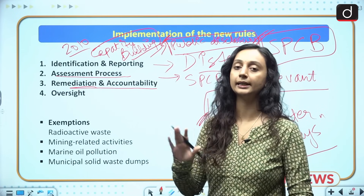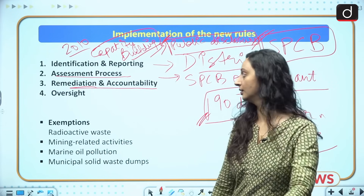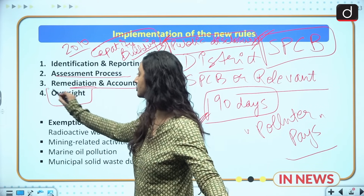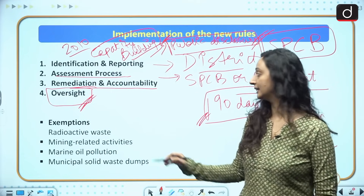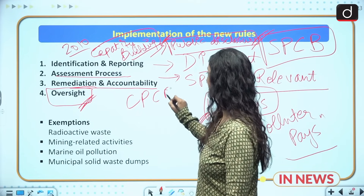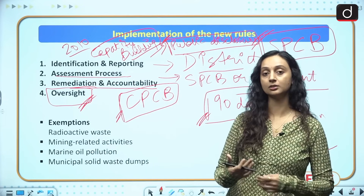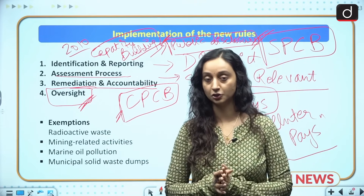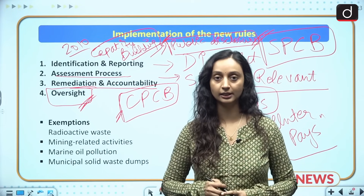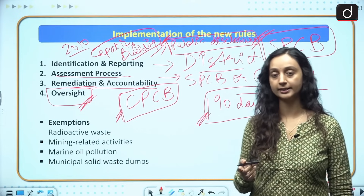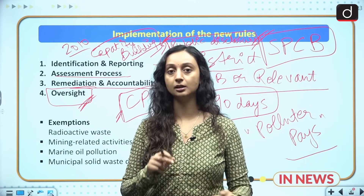The final step is oversight. The Central Pollution Control Board will oversee the entire functioning for transparency and accountability. An online repository will be maintained for all contaminated sites. Criminal proceedings can also be initiated under the Bharatiya Nyaya Sanhita rules if somebody has lost their lives because of chemical pollution, and proceedings will be initiated against the polluter.